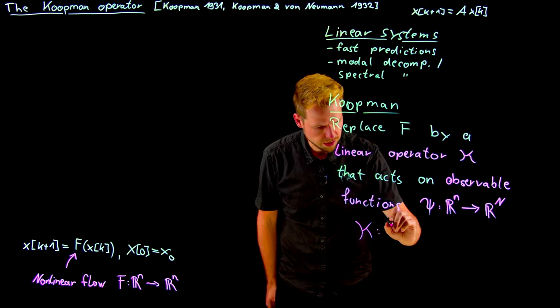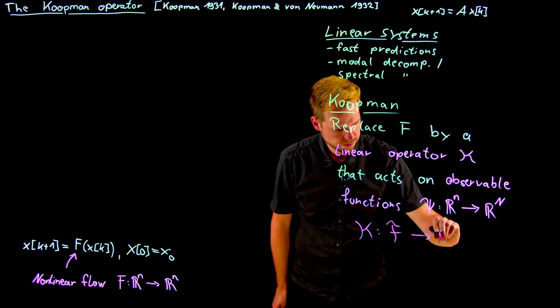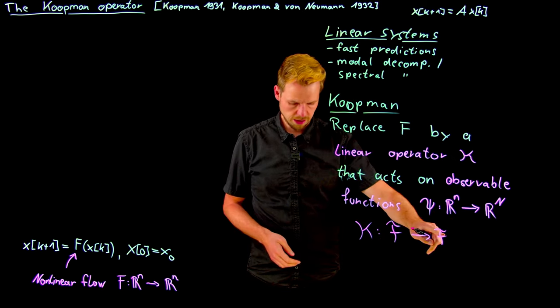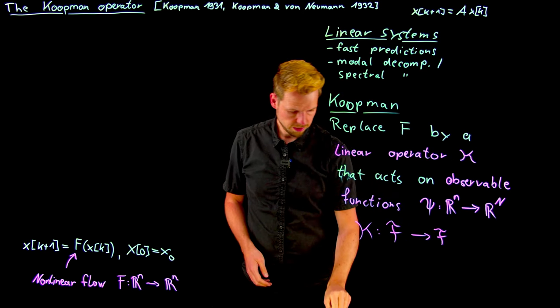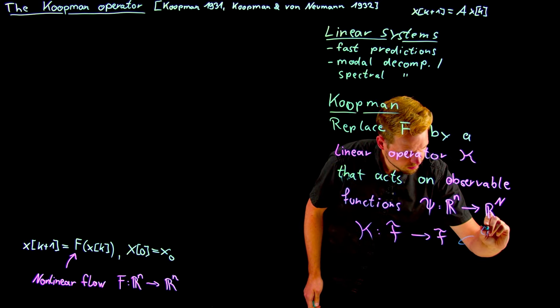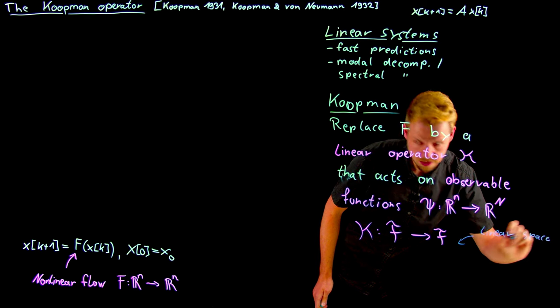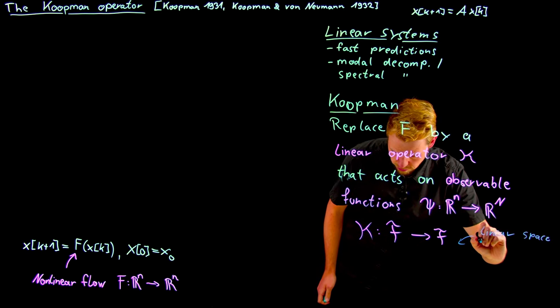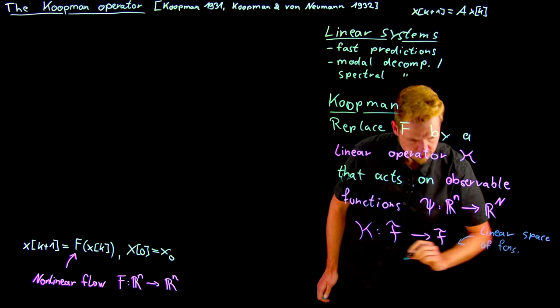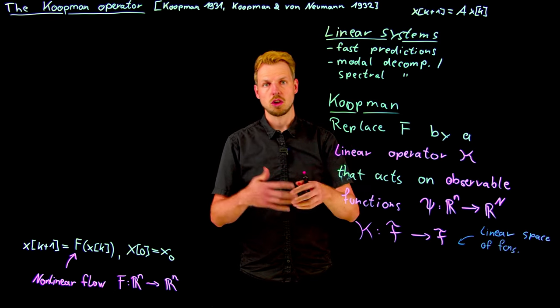Let's call it F, to F in a linear way. So this is a linear vector space, linear space of functions.